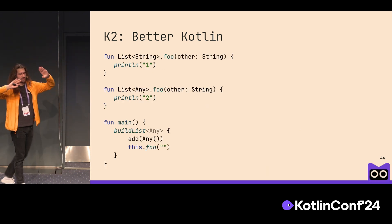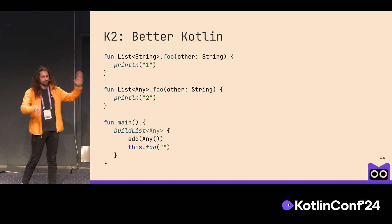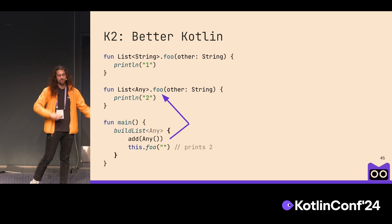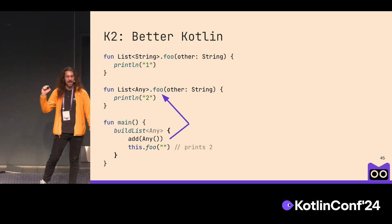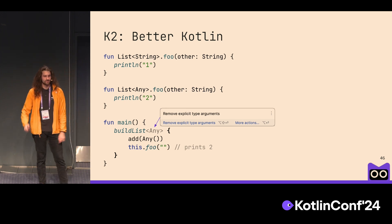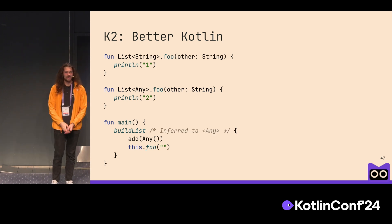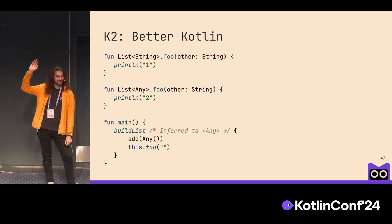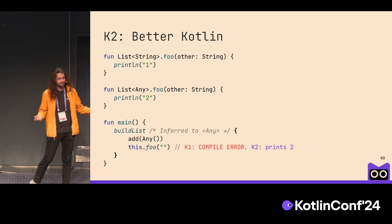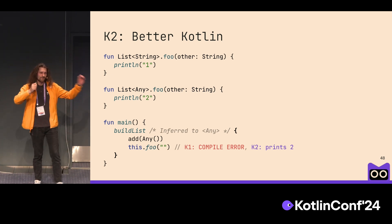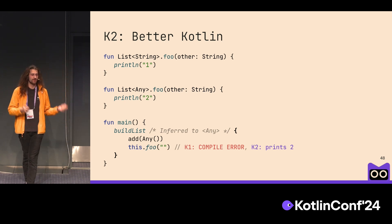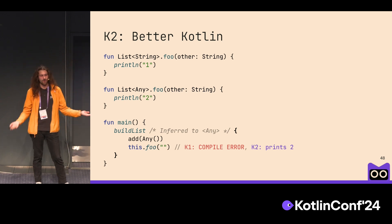Another example: we're building a list, throwing in any object instance and calling a method. It works and prints correctly. Yet there is an IDE warning — there is an explicit type argument that could be removed. So let's remove it. In K1, it does not compile. Nobody knows why, actually. In K2, it just works, because we fixed that. It should just work — why would it not?